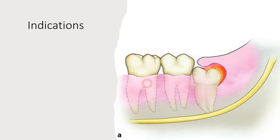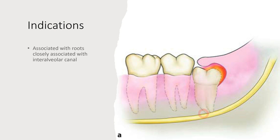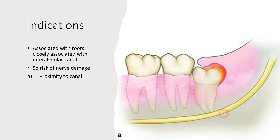There are certain indications and contraindications before performing coronectomy. As seen in this clinical picture, there is a vertically impacted third molar with inflamed operculum, known as pericoronitis, and the roots are very close to the inferior alveolar nerve, increasing chances of nerve damage. The primary indication is when roots are very closely associated with the inferior alveolar nerve, with specific radiographic features indicating proximity and risk of nerve damage during normal extraction.